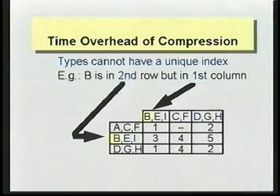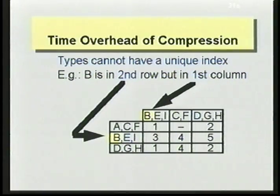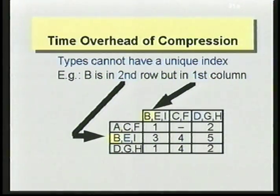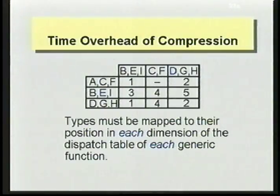There is a space-time trade-off, and there is an overhead caused by compression. Types cannot have a unique index anymore. For example, looking at the compressed dispatch table, B is in the second row but in the first column. So there must be a way to map types to their position in each dimension of the dispatch table of each generic function.